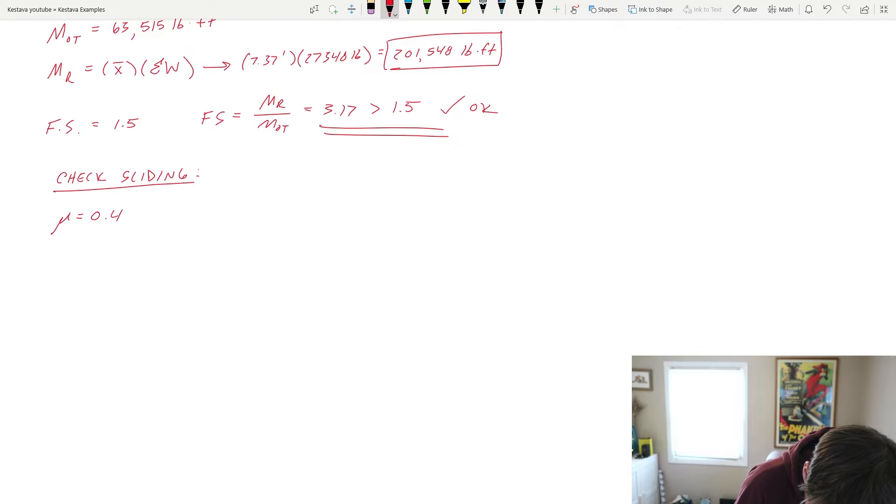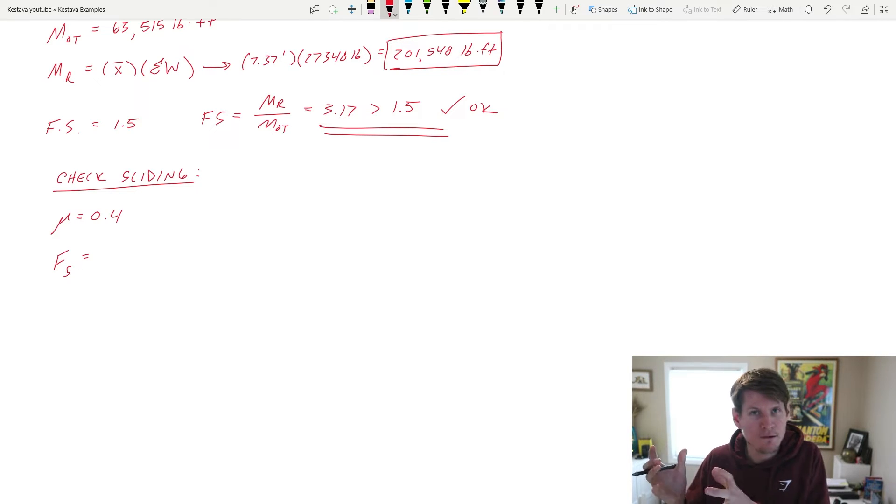We know we have a friction factor equal to 0.4 that was given to us, and then our force sliding. So this is the demand side of things.